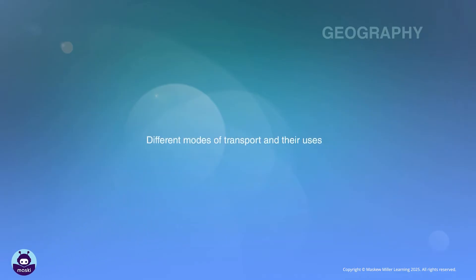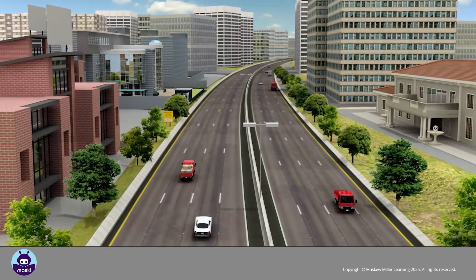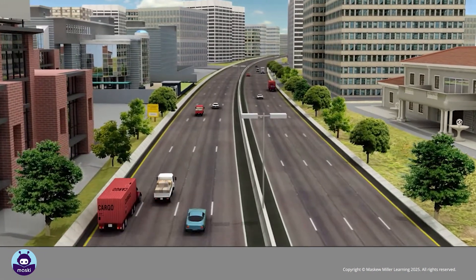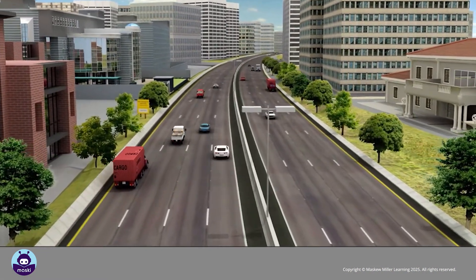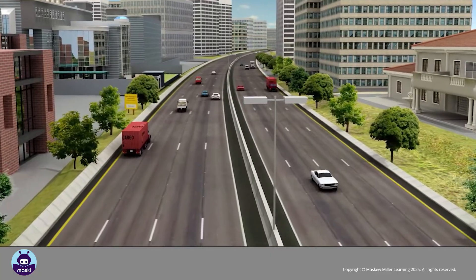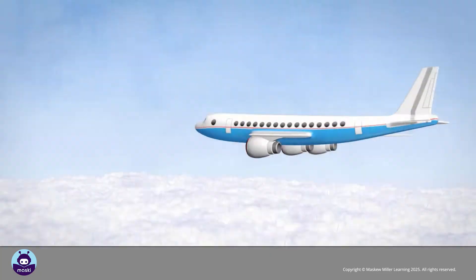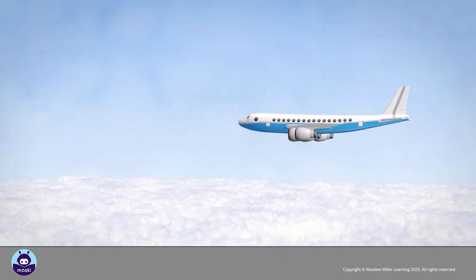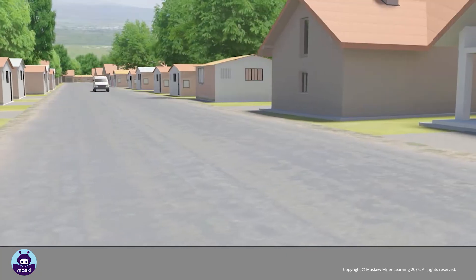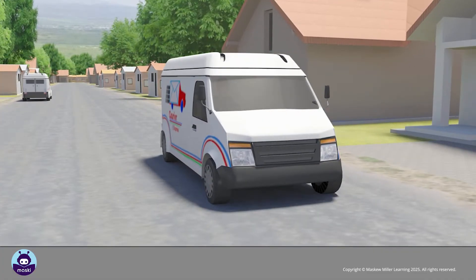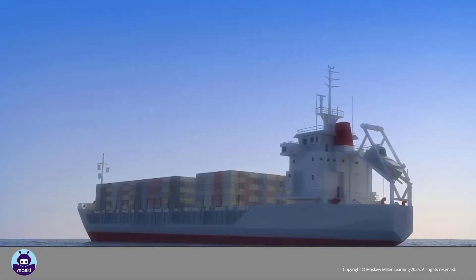Different modes of transport and their uses. A mode of transport means the type of transport used for movement of goods or people. Transport can happen in the air, over the land such as by road or rail, across the seas, or even underground using pipelines.